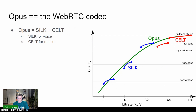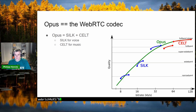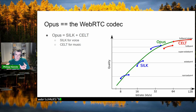Opus achieves this by combining two existing codecs: SILK for voice, which was developed by the Skype team, and CELT for music. SILK has configurations for narrow band, wideband, and full band. CELT has two modes: full band audio and full band stereo. Combining these modes and configurations produces the green curve seen in the initial comparison graph.